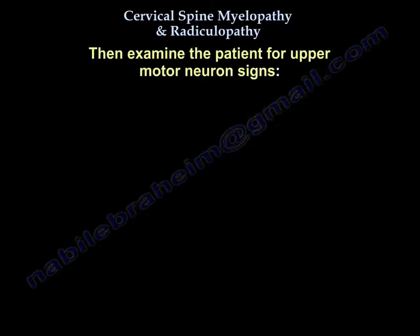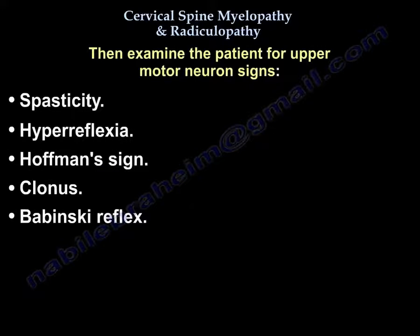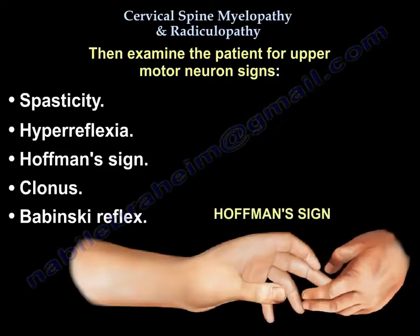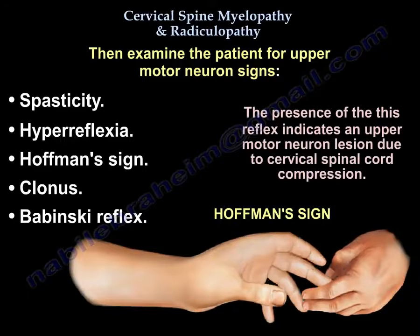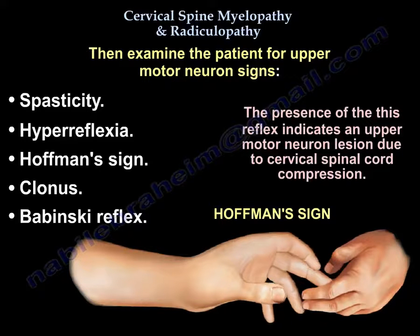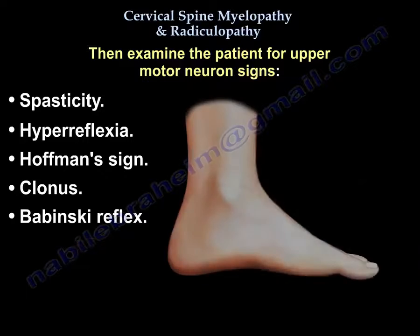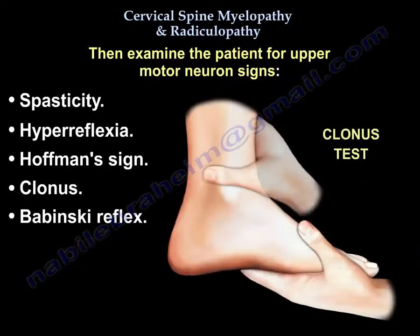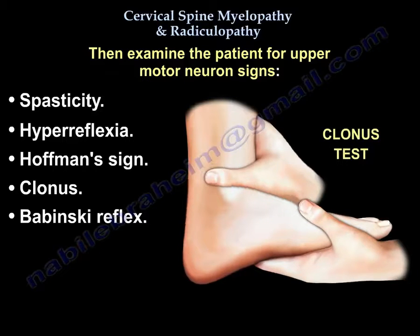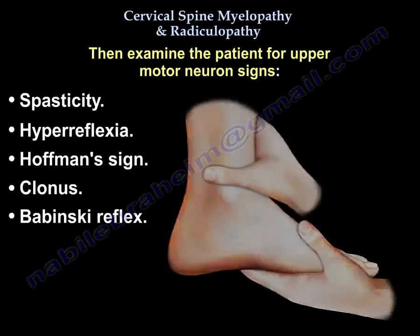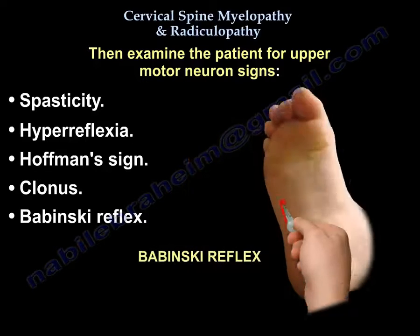Then examine them for upper motor neuron signs: spasticity, hyperreflexia, Hoffmann sign — the presence of this reflex indicates an upper motor neuron lesion due to cervical spinal cord compression — clonus, and Babinski test.